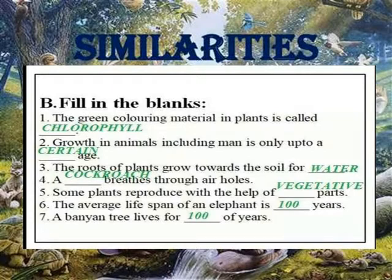Some plants reproduce with the help of vegetative parts. The average lifespan of some plants is 100 years. They want three leaves for 100 of years.